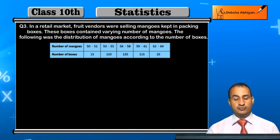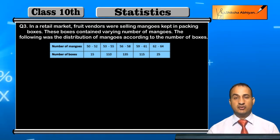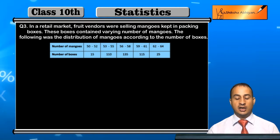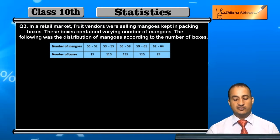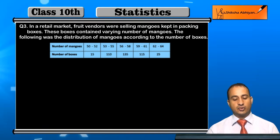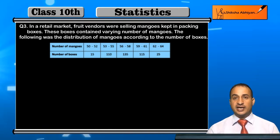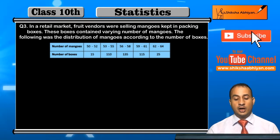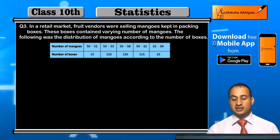The data gives the number of mangoes — for example, 52 mangoes — and so on. Find the mean number of mangoes kept in the packing box. Which method did you choose to find the mean?